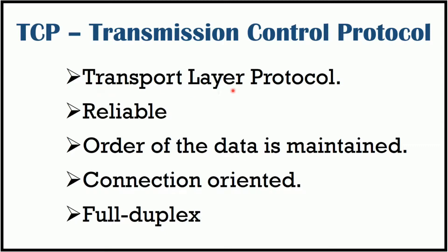TCP is a transport layer protocol. It is a reliable protocol because it provides flow and error control mechanisms. It also uses an acknowledgment mechanism to check the safe and sound arrival of data — the receiver always sends either a positive or negative acknowledgment about the data packet to the sender, so that the sender has a clear indication of whether the packet reached its destination or needs to be resent. The order of data is maintained.